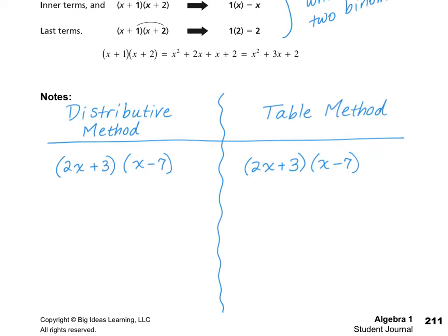What I'm going to do for the distributive method is start with my first term in my first polynomial and multiply that by both of the terms in the second binomial. So I'm going to do 2x multiplied by x, and then add it to 2x multiplied by negative 7. Then I'm going to take the second term, which in this case is positive 3, and multiply it also with the two terms in the second binomial. So that's going to be plus 3 multiplied by x, and then another plus 3 multiplied by negative 7.